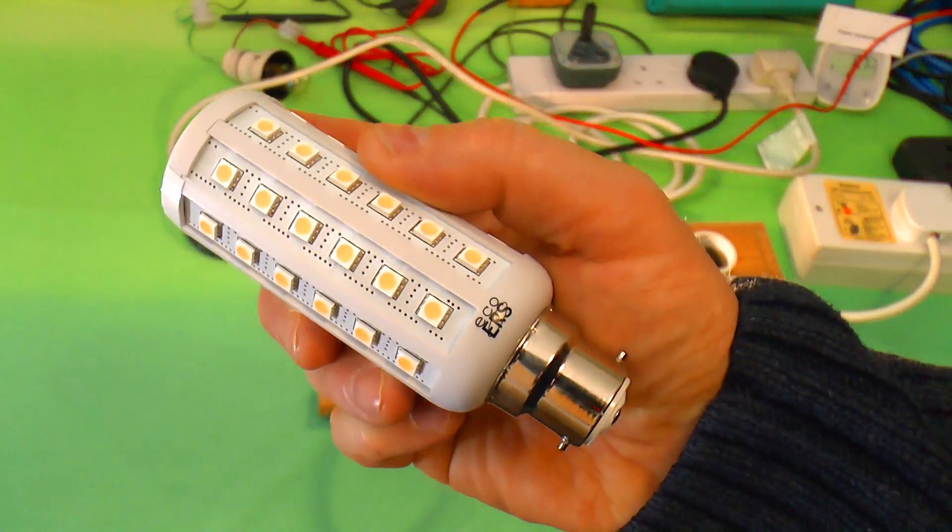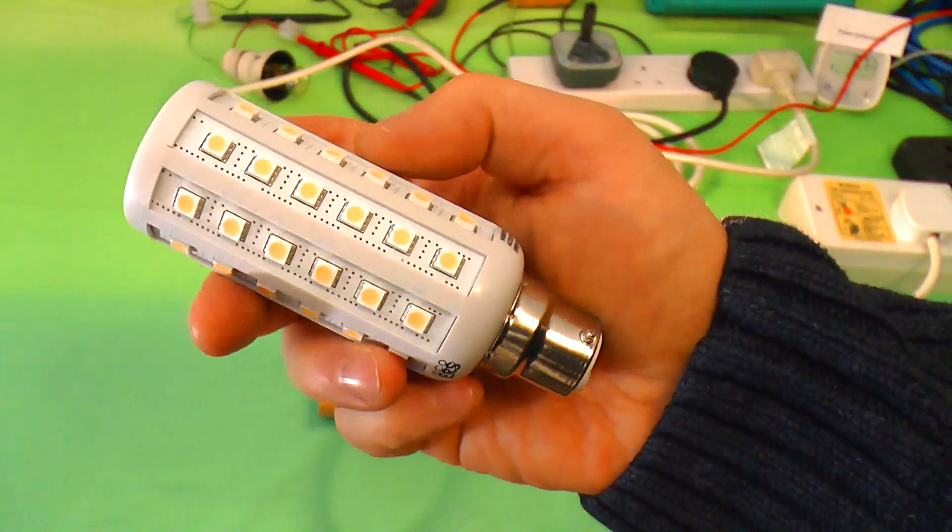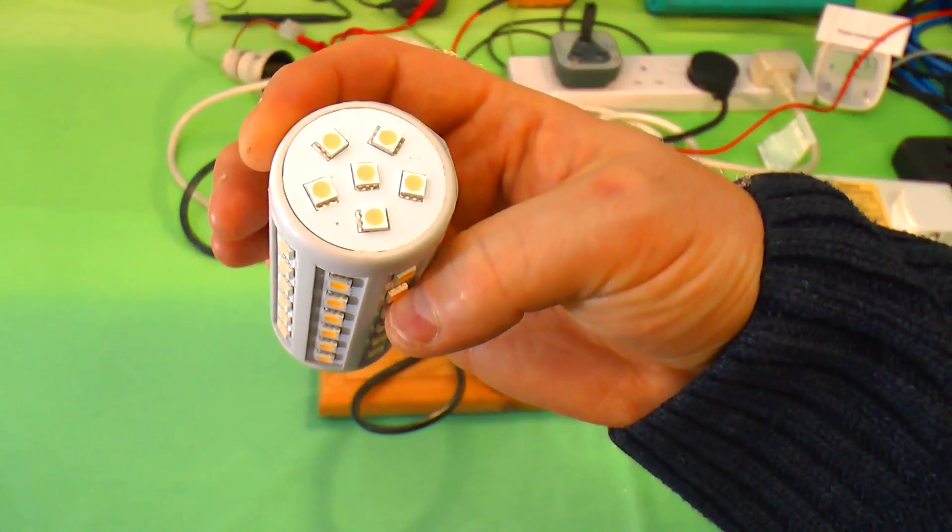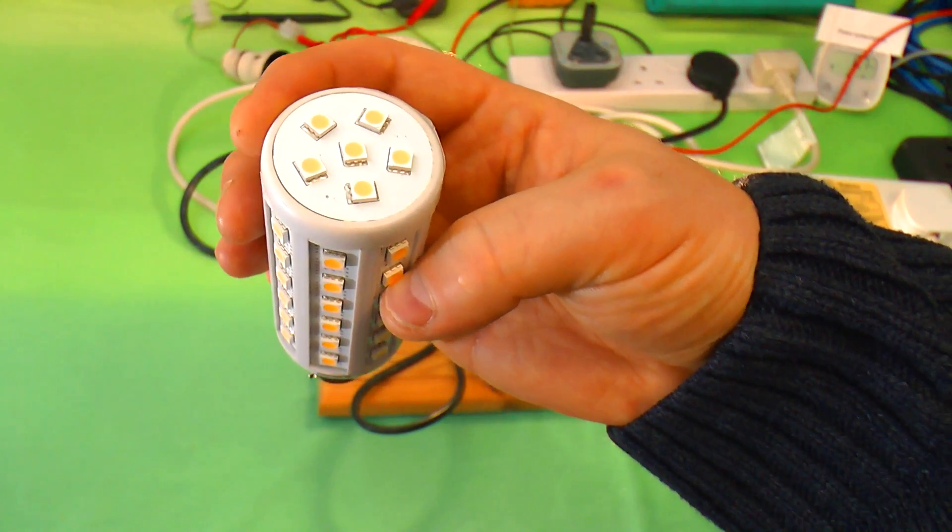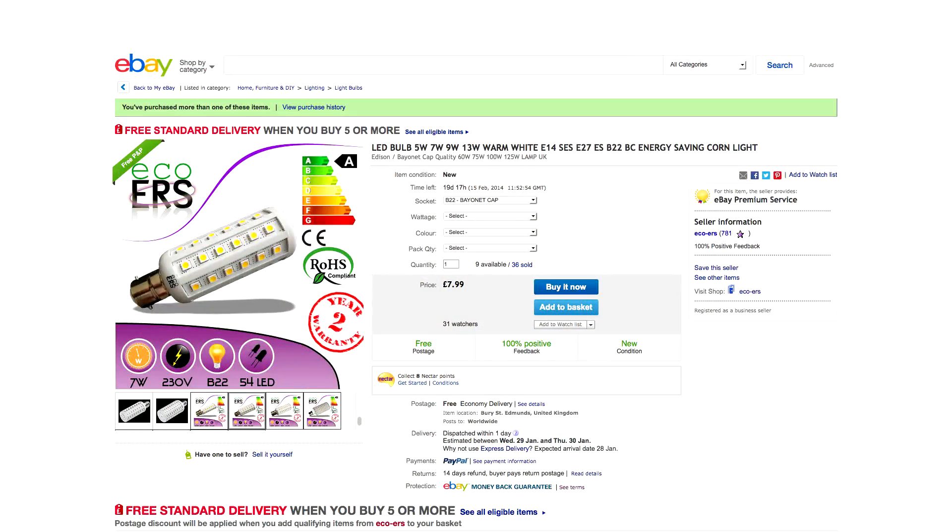This, however, is a different matter. This is what's often referred to as a corn lamp or corn cob lamp, with LEDs arranged in strips along the sides, plus a cluster on the top. This one was purchased on eBay from a UK-based company called Eco Energy Reduction Solutions, or Eco Earths.